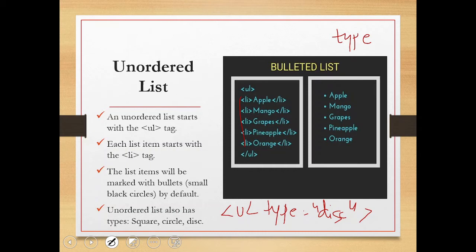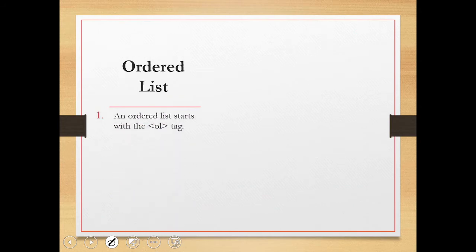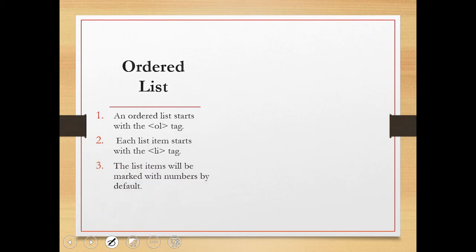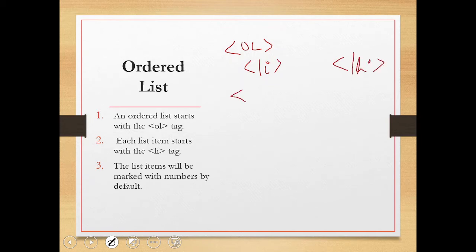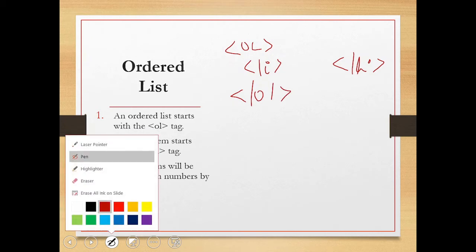Next is the ordered list. An ordered list starts with the ol tag. Each list item starts with an li tag — li stands for list item. The list items will be marked with numbers by default. When ordered, there has to be a numbering or alphabet pattern. The format is the same as an unordered list: you write ol, followed by li items, close the li tags, and then close the ol tag.